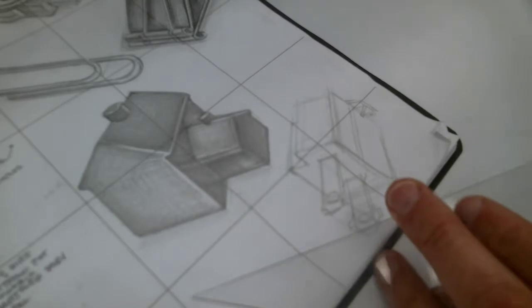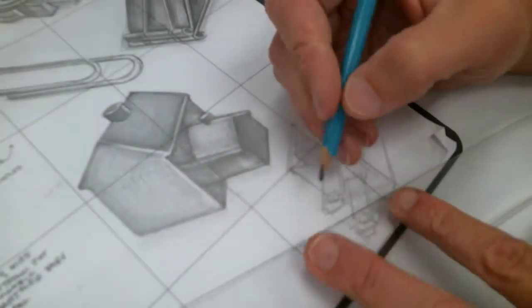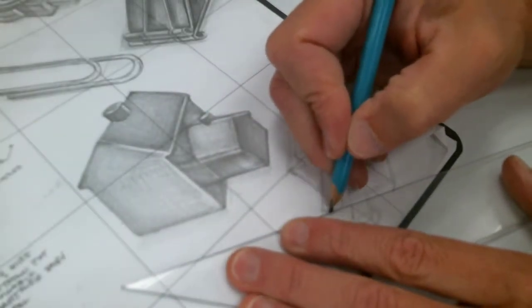Then you can go back in and start to illustrate at least the sides to it. And again, you don't have to use a straight edge, but it's kind of a quick way to build this up.